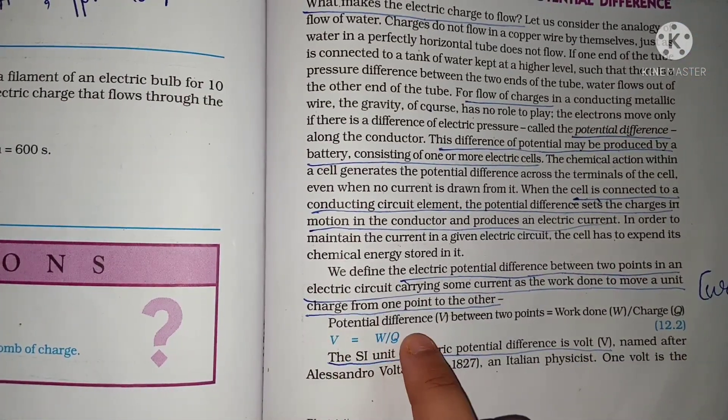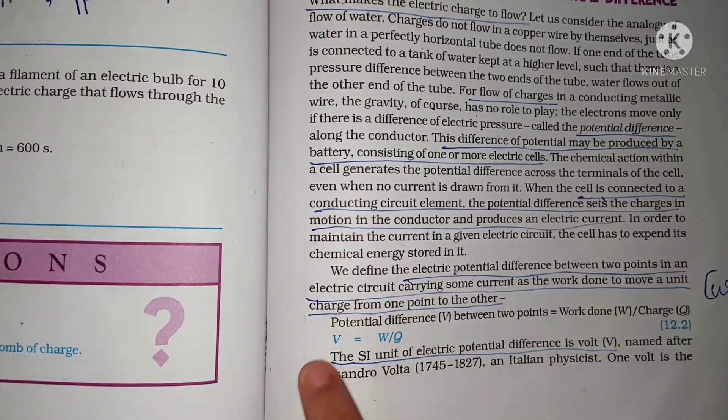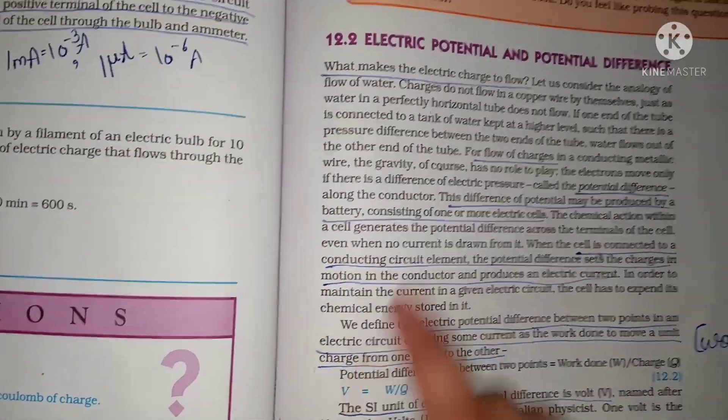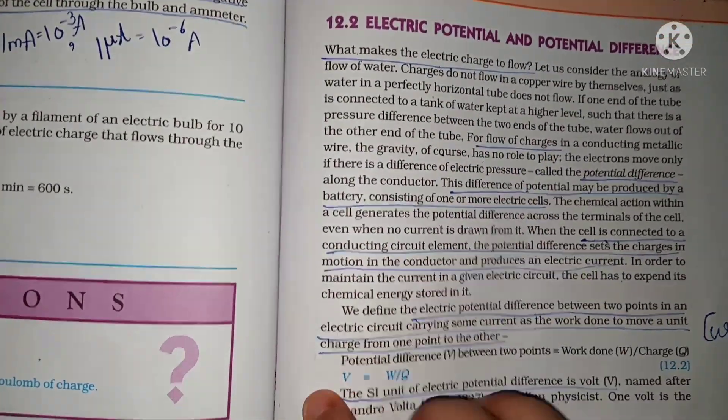V is equal to W upon Q. W is work, Q is charge, and V is electric potential, which is also known as potential difference.